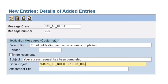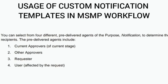Once saved, this notification message will replace the document associated with the message class in MSMP workflow Step 4 — Notification Variables and Templates. It also replaces the SAP entry in the Owner column to the customer. The third step is to use these custom templates in MSMP workflows. Go to the respective workflow and assign the notification templates in MSMP workflow maintenance, where you can also select recipients. There are four pre-delivered agents: current approvers, other approvers, the requester, and the user affected by the request.